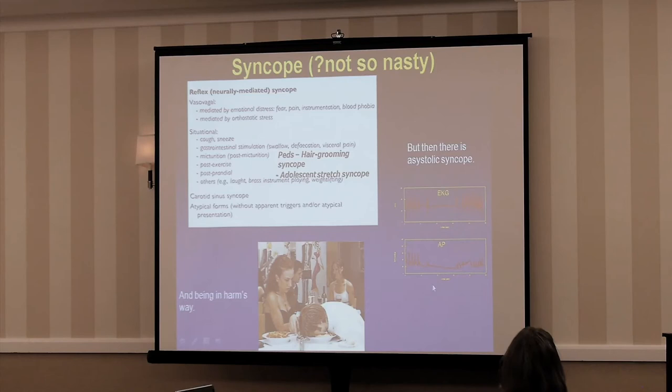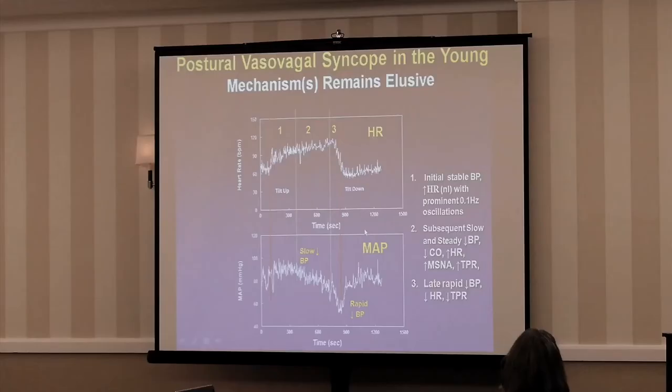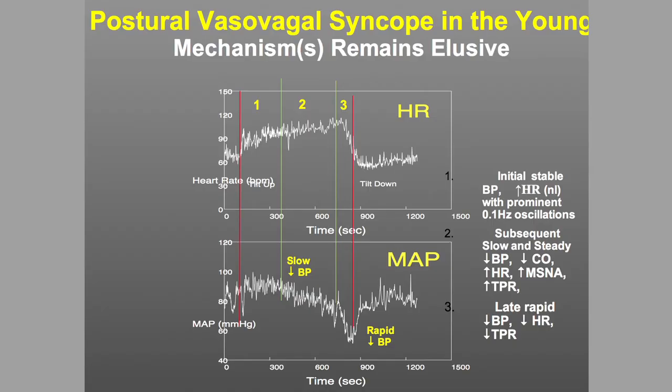There are various forms of reflex syncope. Vasovagal is the main subject, but I wanted to mention two apparently unique pediatric ailments: hair grooming syncope — not always related to a hair dryer — and adolescent stretch syncope, which is probably kinking of the vertebral artery. What I typically see with syncope is an increase in heart rate, then a stable blood pressure followed by a gradual fall, then an abrupt fall.